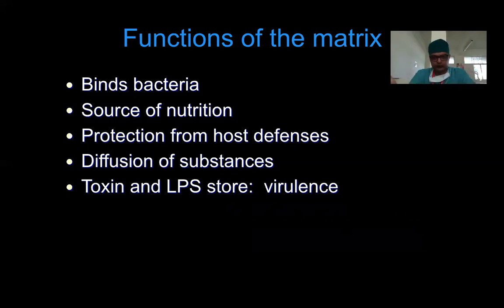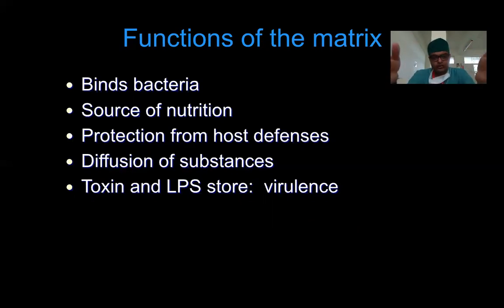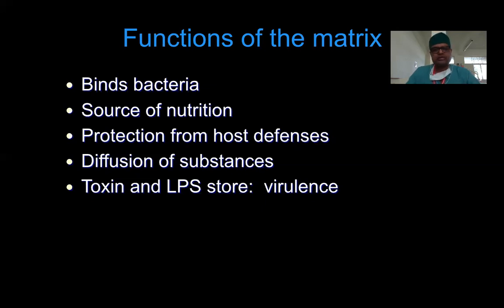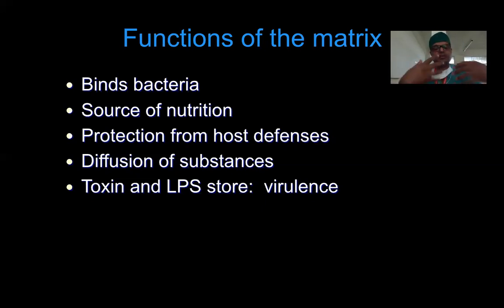What does the matrix do? First and most importantly, it binds all the bacteria — it acts like a glue. Second, it serves as a source of nutrition, since dextrans and levans are glucose derivatives that bacteria use for food. Third, it protects bacteria from host defenses. Just as you wouldn't walk on glue to pick something up, neutrophils and immunoglobulins struggle to reach bacteria embedded in the matrix.